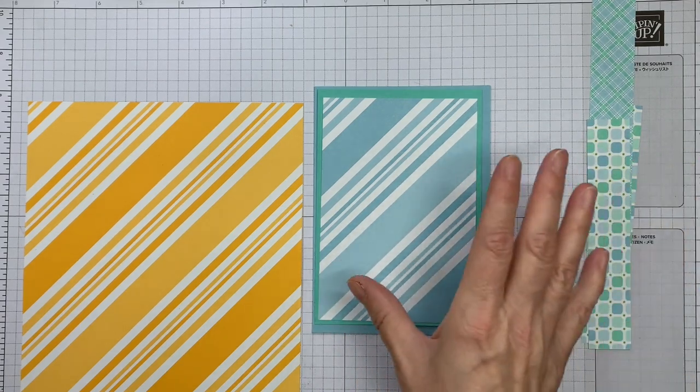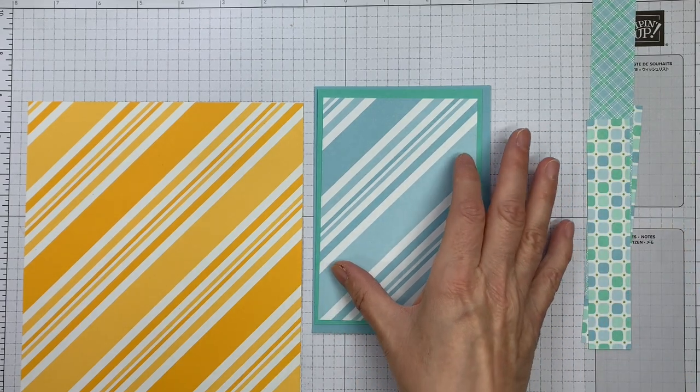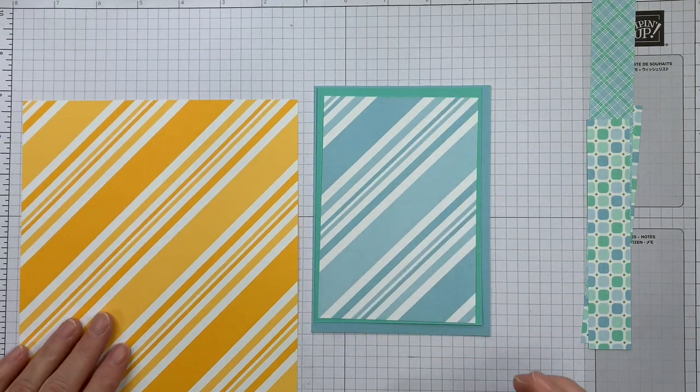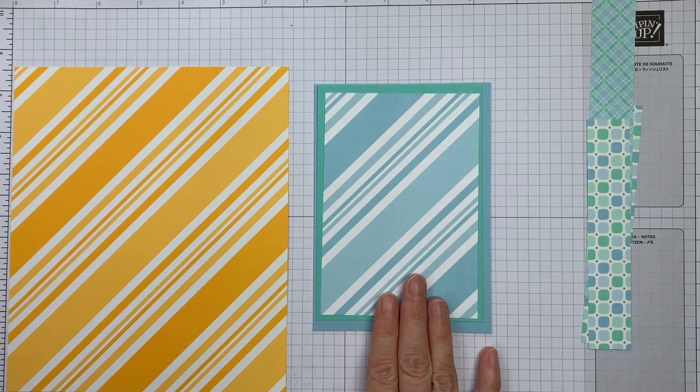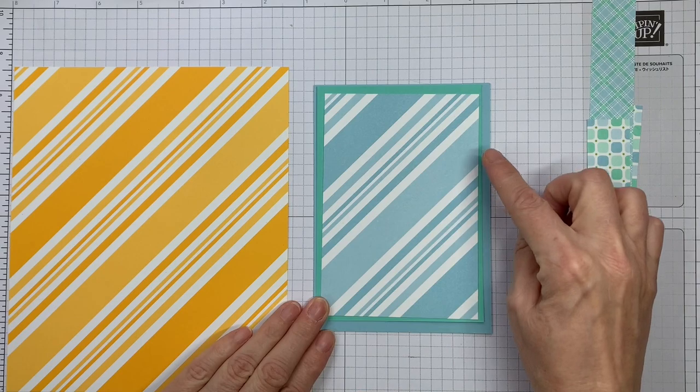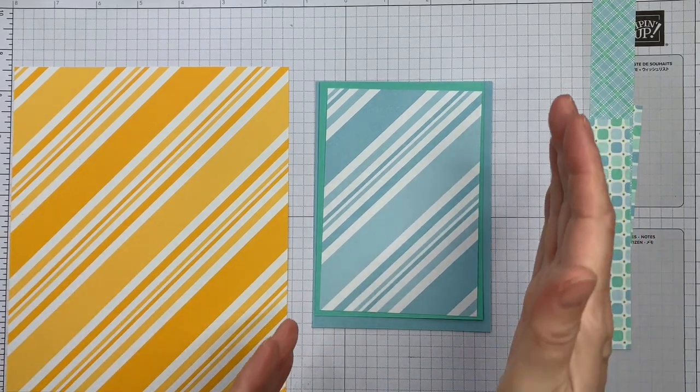These ones in particular I do love because they've got the broad stripes and the narrow stripes and you can use these in a variety of ways. Now one of the things that you can do is actually use the stripes for placement of your sentiment.